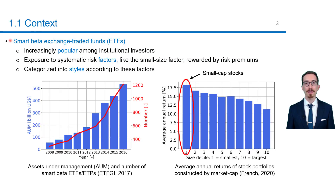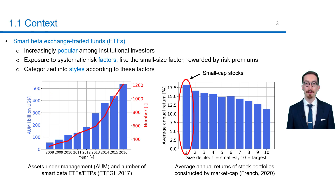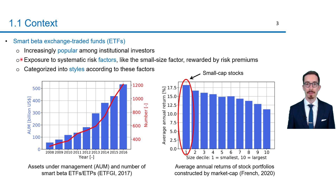Let's start with fairly new investment products which are called smart beta exchange traded funds. These funds have become increasingly popular among institutional investors during the past decade. The figure on the left shows the increasing assets under management and their number during the last few years. These products provide exposure to systematic risk factors that are rewarded by risk premiums.